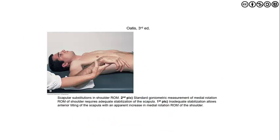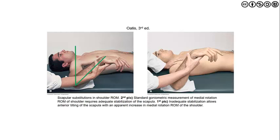Images comparing scapular stabilization demonstrate that inadequate stabilization allows the shoulder to anteriorly tilt, achieving only about 45 degrees of internal rotation. When more proximal stabilization is provided, the glenohumeral joint no longer translates into the anterior plane, and we see that internal rotation is reduced by about 50% — they obtain only 20 to 25 degrees of glenohumeral internal rotation. The key takeaway: you need to stabilize proximally, specifically when taking range of motion measurements, because that pseudo joint can move quite freely.